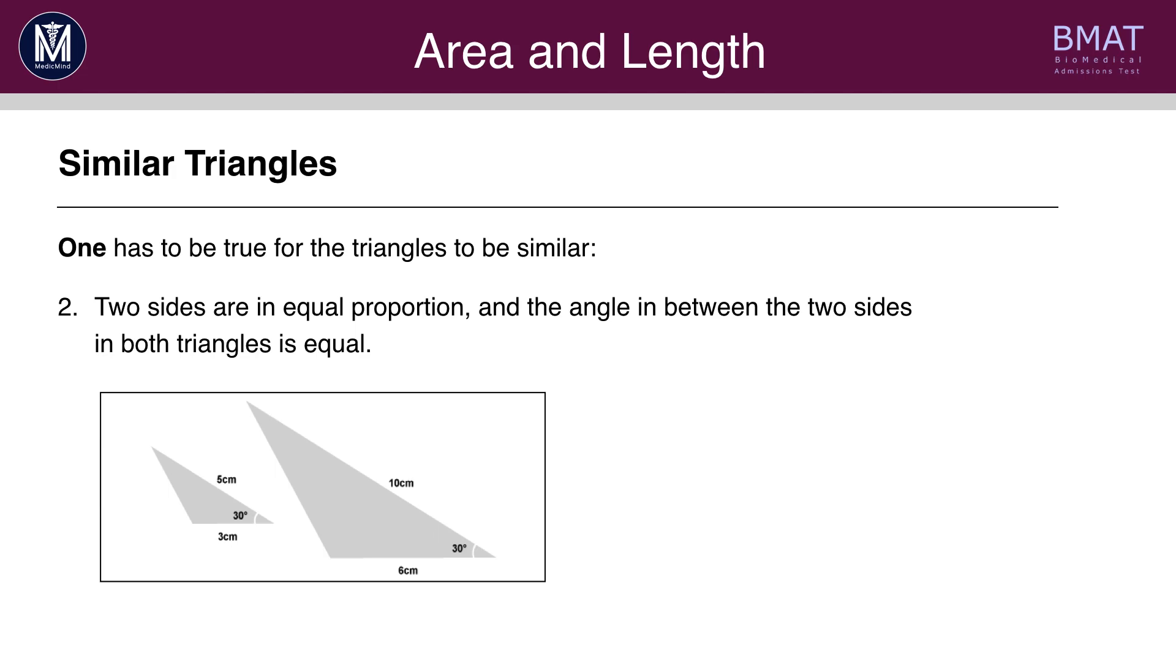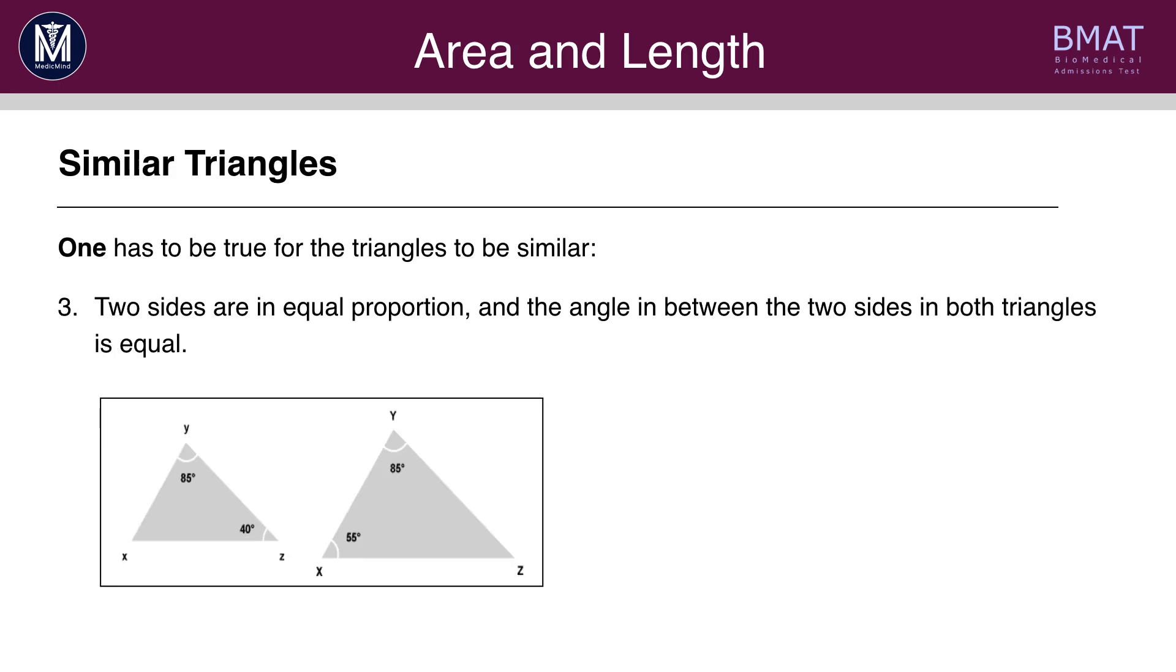Bear in mind that only one of these rules has to be true for the triangles to be similar. And now let's look at the third possible rule. Two sides are in equal proportion, and the angle in between the two sides in both triangles is equal. Here, we have two sides in equal proportion in both triangles, and the angle in between, 85 degrees, is equal.